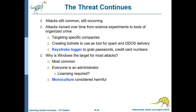The threat continues — as technology becomes innovative, so does malware. Attacks have moved from science experiments to tools of organized crime, targeting specific companies such as the Forbes 500. Creating botnets for spam and DDoS delivery is common, as is keystroke logging to grab passwords and credit card numbers — software that records all keystrokes as long as the keyboard is used.